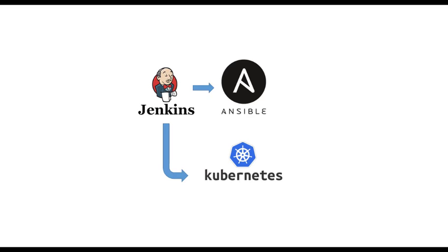We will configure everything one by one. First I'm sending files to Kubernetes, then creating two files and sending them to Kubernetes, then creating the Ansible YAML file and sending it to the Ansible server. We will learn what needs to be updated in those files later. Let's start.